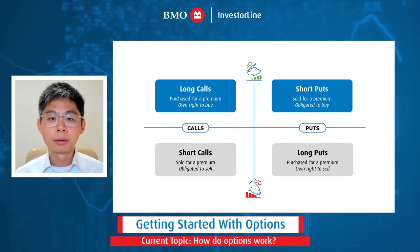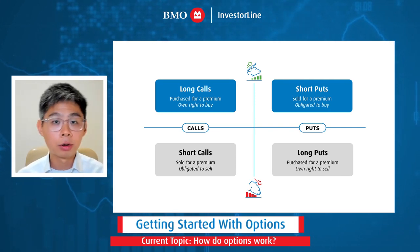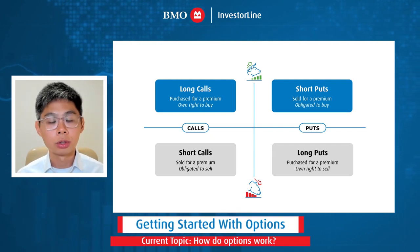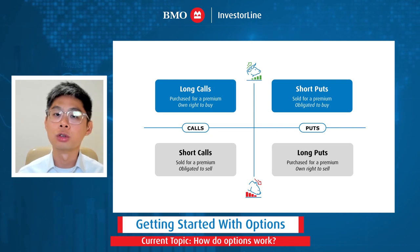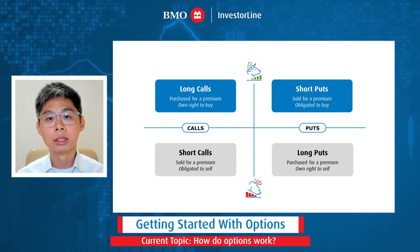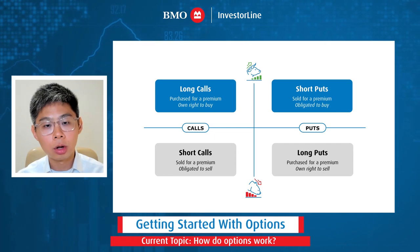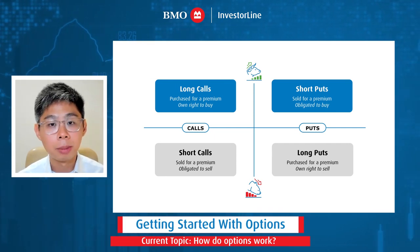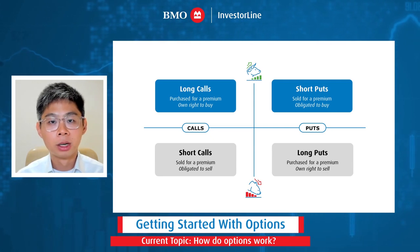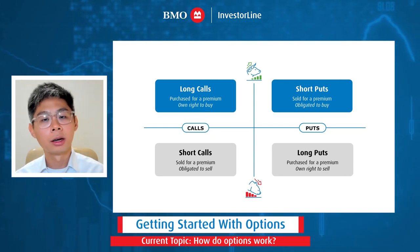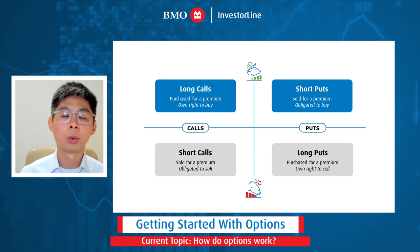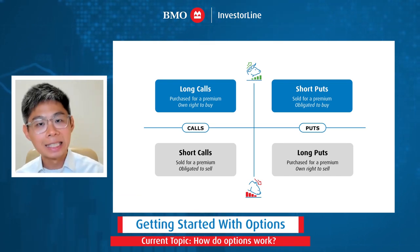Because you have calls and puts, and you can be the buyer or seller of either, a T-chart is a great way to remember the different strategies. Bullish strategies are on top, bearish strategies on the bottom; calls are on the left, puts on the right. A long call — meaning buying a call — and a short put — meaning selling a put — are both bullish strategies. A long call gives you the right to buy the stock; a short put gives you the obligation to buy the stock.